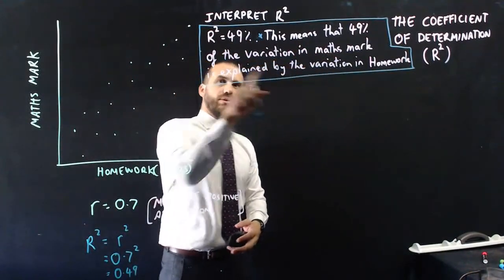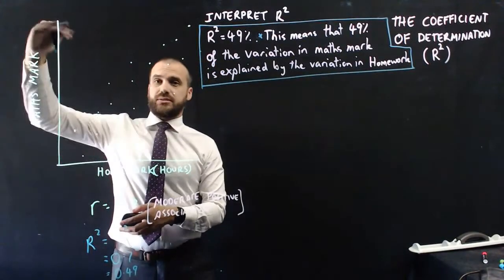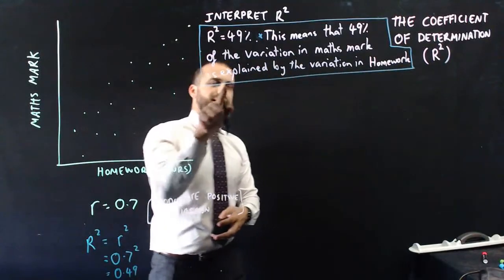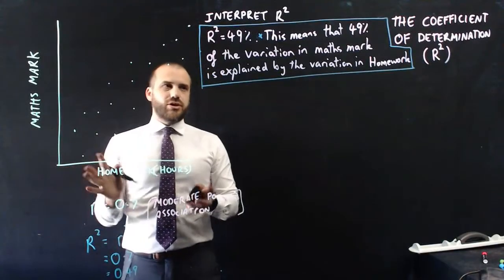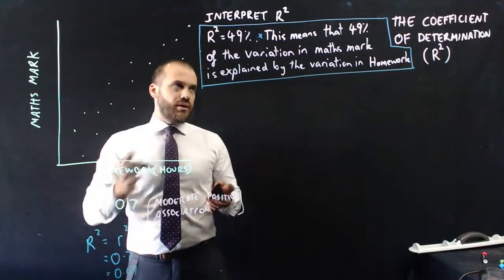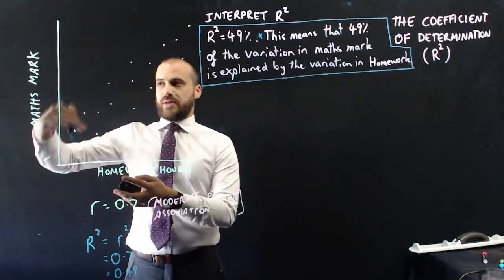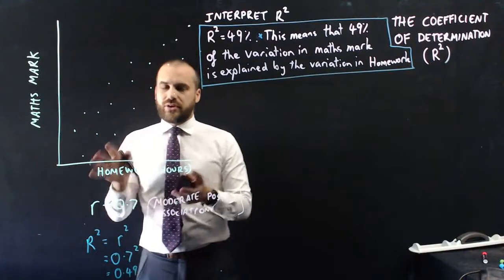This means that 49% of the variation in MathsMark, you can see some people getting low MathsMark, some people getting high. 49% of the variation in MathsMark is explained by the variation in Homework. So what does that mean? It means that 49% of the way that this varies up and down is accounted for by the way that the Homework varies up and down.